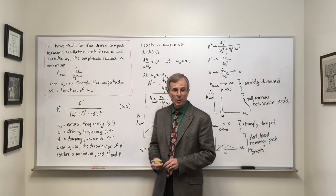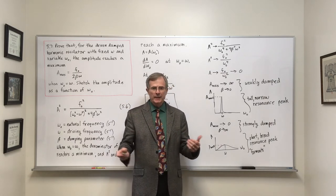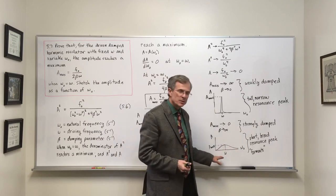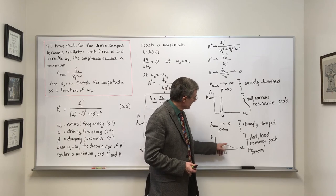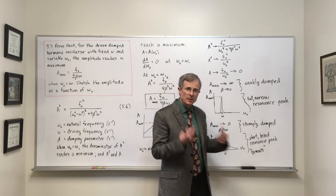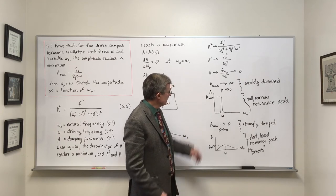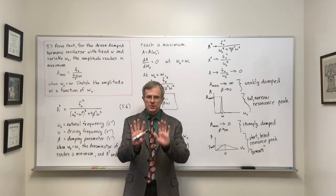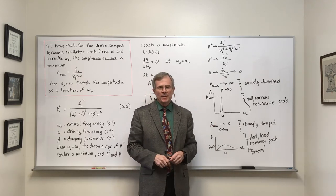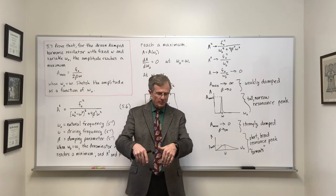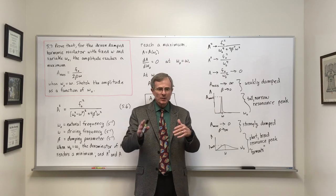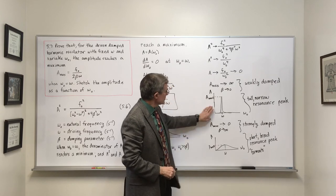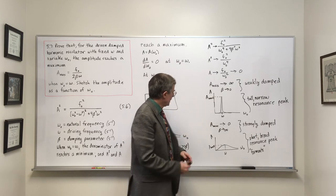Formants are the basis of vowel production — ah, a, e — I'm changing the shape of my vocal column and shifting the positions of these formants. They're broad because of the strong damping in the soft tissue walls. By contrast, an organ pipe is made of metal or wood with very little damping, giving tall, narrow resonance peaks. Similarly, a child on a swing has very little damping, so it also shows a sharp resonance peak.